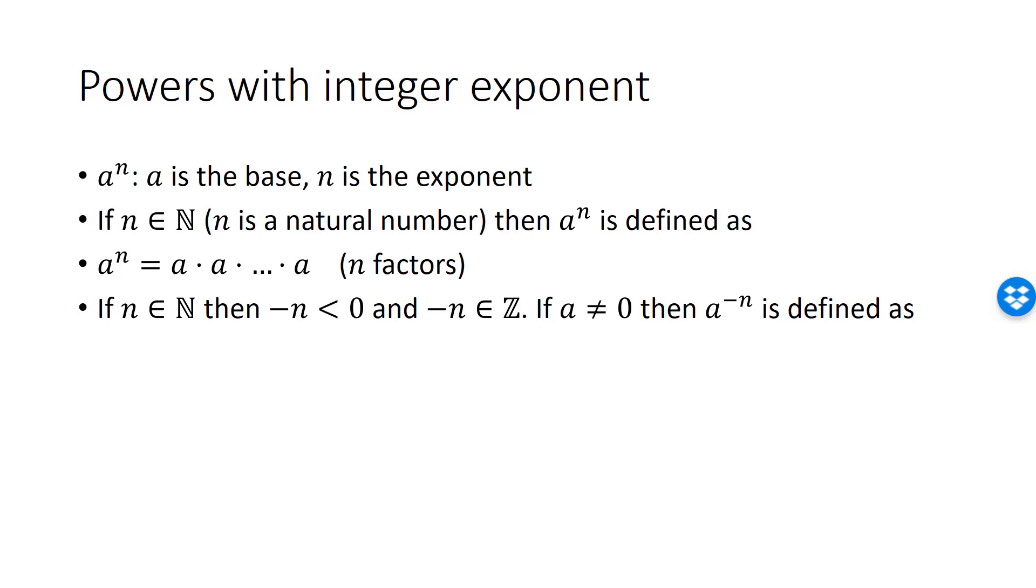then a raised to minus n is defined as 1 divided by a to the n. Since n is a natural number, the denominator has the natural definition as the repeated product of base a n times.